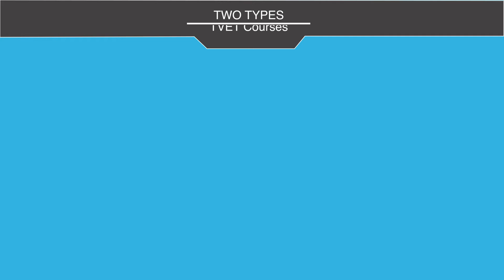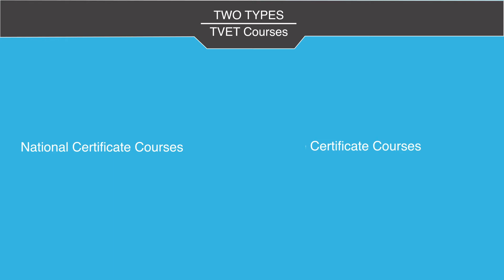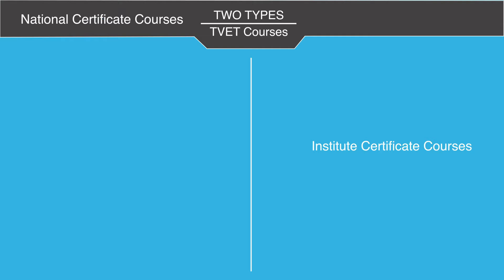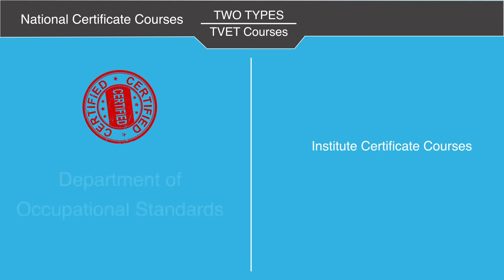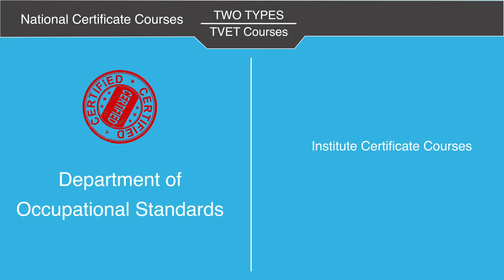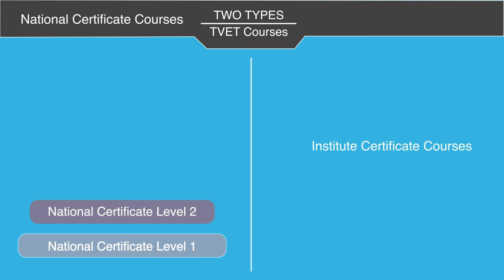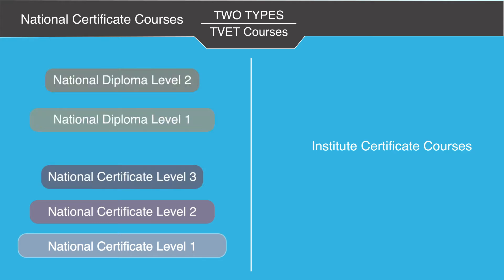There are two types of Tivet courses: National Certificate courses and Institute Certificate courses. National Certificate courses, or NC courses, are the ones certified by the Department of Occupational Standards. They have five levels: National Certificate NC levels 1, 2, and 3, and National Diploma levels 1 and 2.